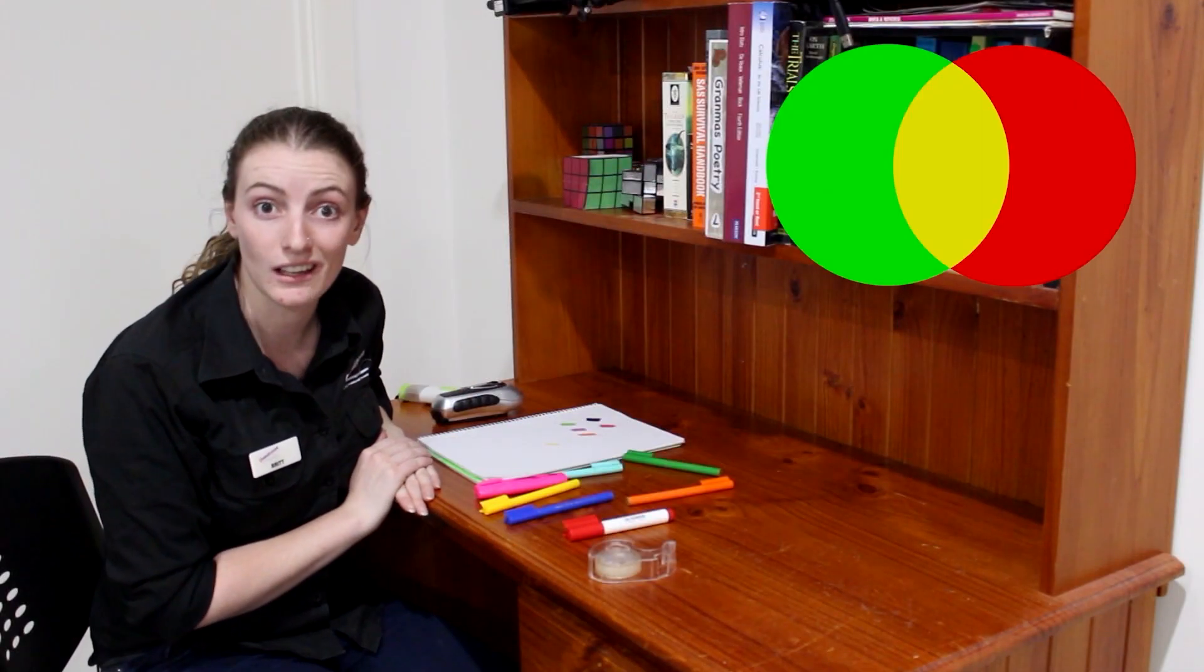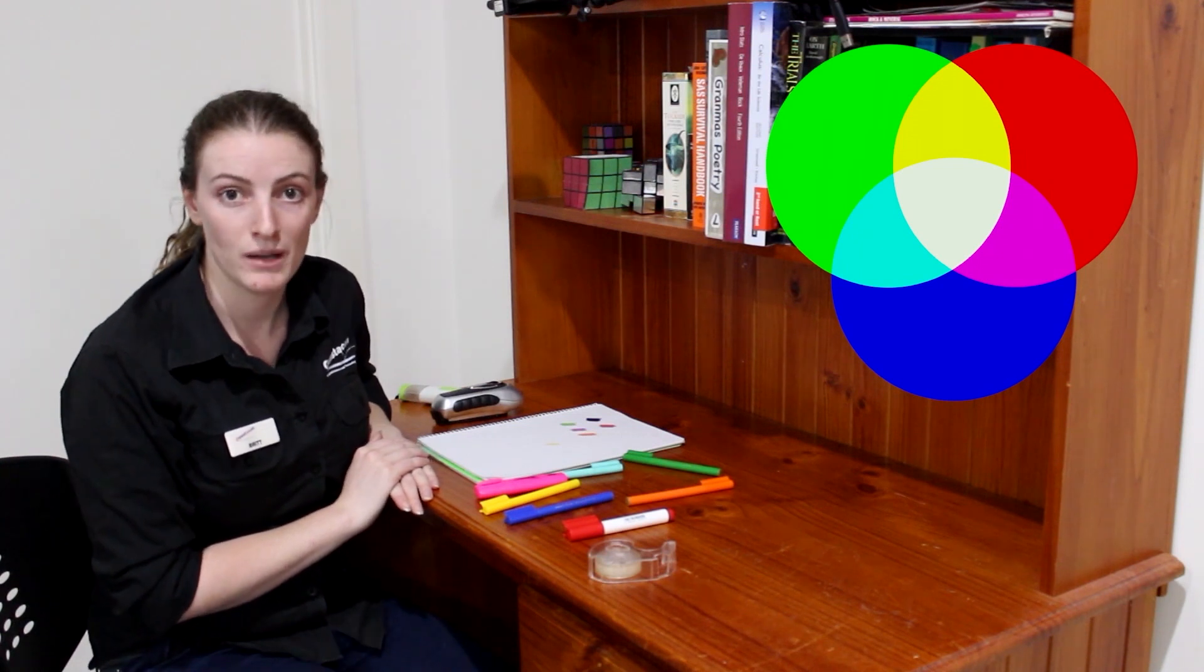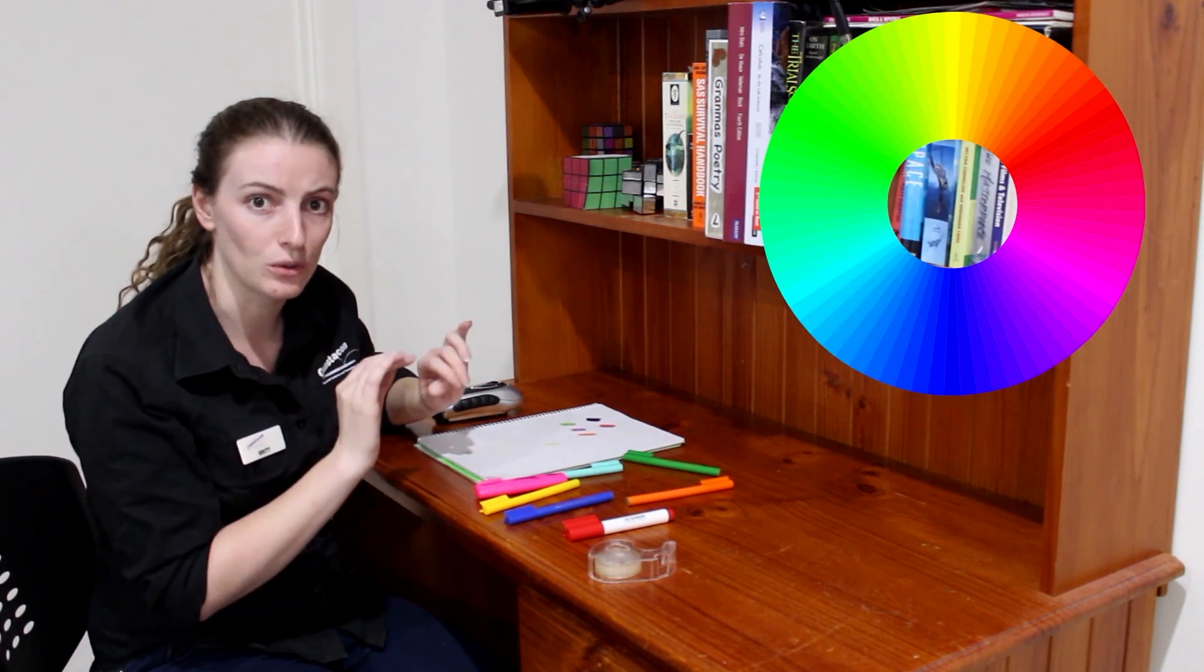When you have a computer screen, it's only got a red light, a green light and a blue light in each pixel. But by mixing these in different quantities, you can simulate the whole rainbow on the screen, just by tricking our eyes.